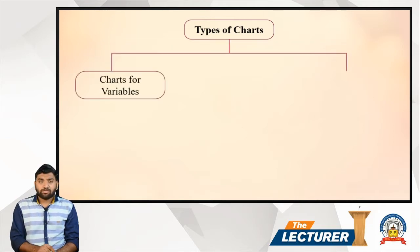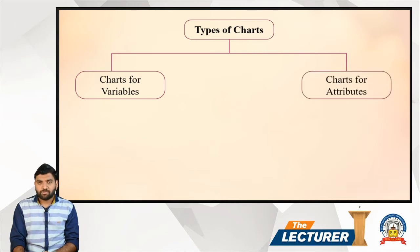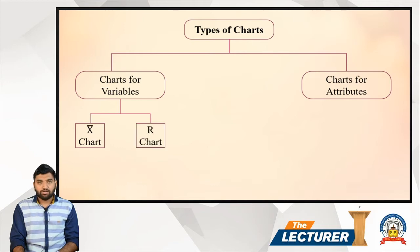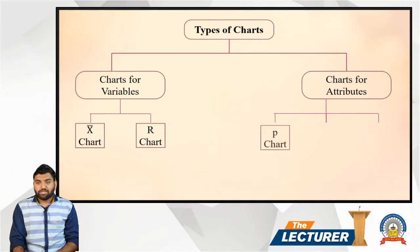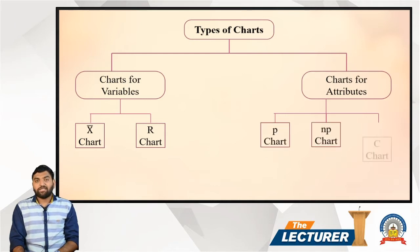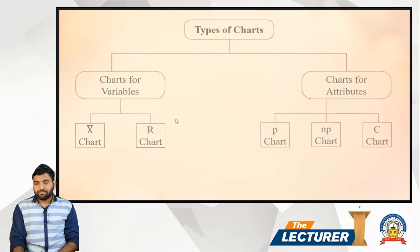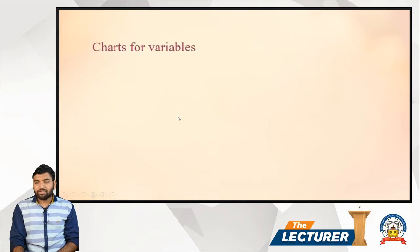Statistical quality control charts are of two different types. The first one is charts for variables and then charts for attributes. In variable charts, there are two sub-charts: first is the X-bar chart and then the R chart. In charts for attributes, there are three different charts: P chart, NP chart, and C chart. We will discuss all these charts in detail.